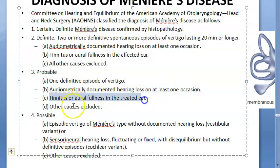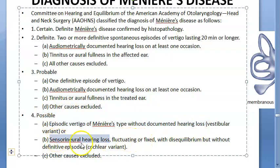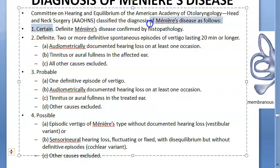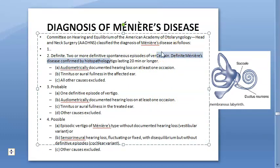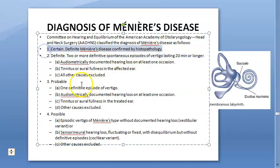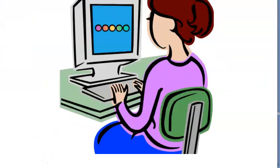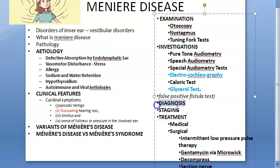For probable Meniere's disease: audiometrically documented hearing loss plus tinnitus. For possible Meniere's disease: episodic vertigo without documented hearing loss, or sensorineural hearing loss without vertigo — the latter resembling the cochlear variant. A certain diagnosis requires histopathological confirmation.